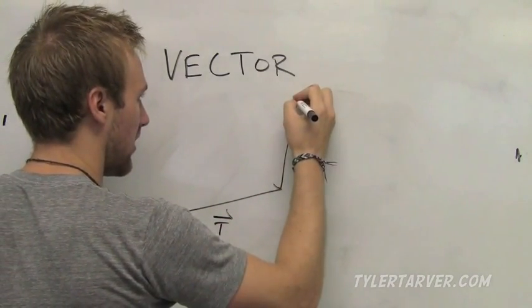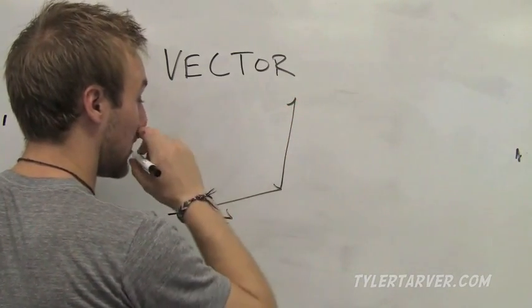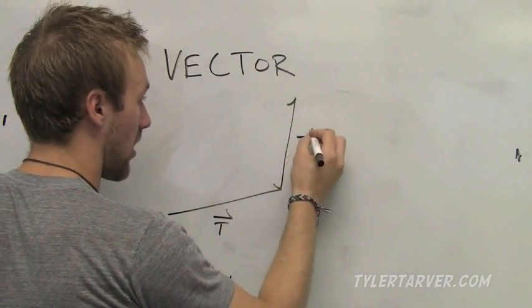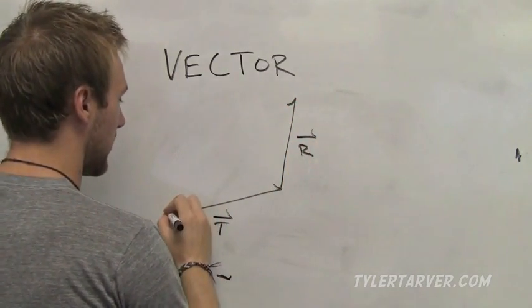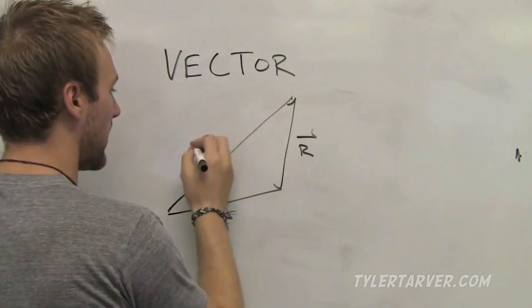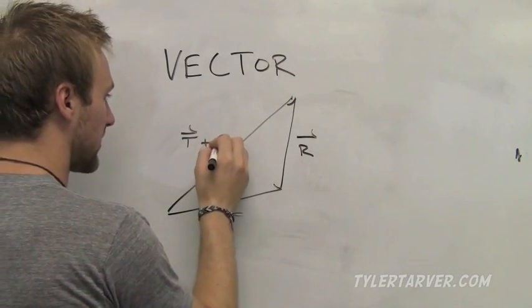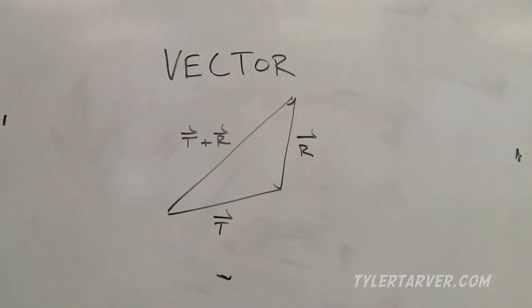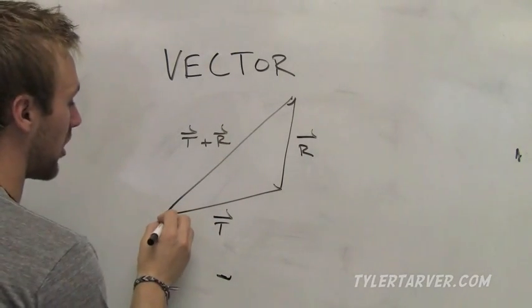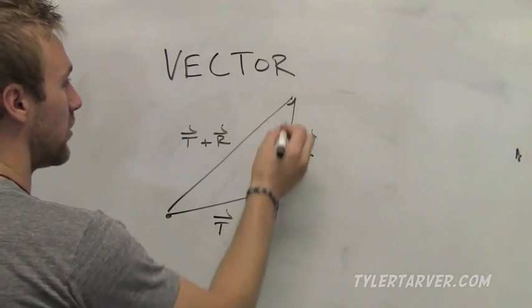And this one goes here, and that's vector r. This one is right here, that would be vector t plus vector r.